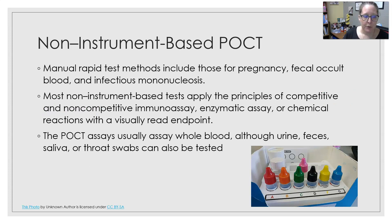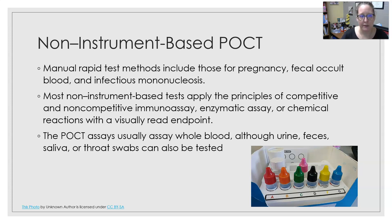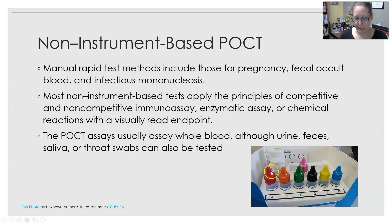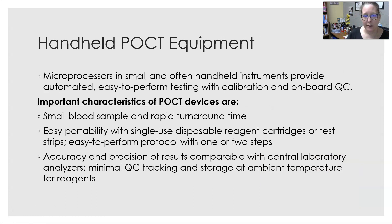Non-instrument-based point of care tests include manual rapid test methods — for example, tests for pregnancy, fecal occult blood, and infectious mono. Most non-instrument-based tests apply principles of competitive and non-competitive immunoassays, enzymatic assays, or chemical reactions with a visually read endpoint of color change. These assays usually test whole blood, although urine, feces, saliva, and throat swabs can also be tested, and they come in kits with easy-to-follow instructions.